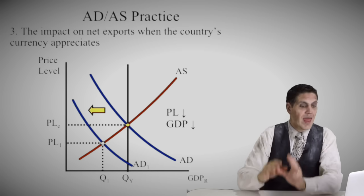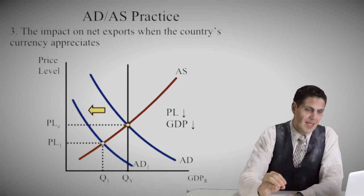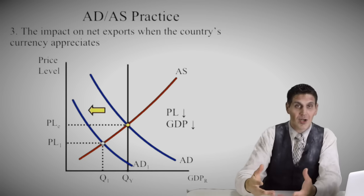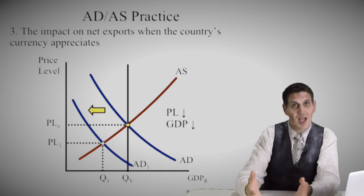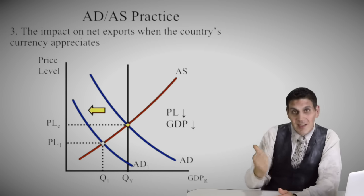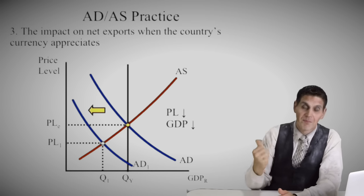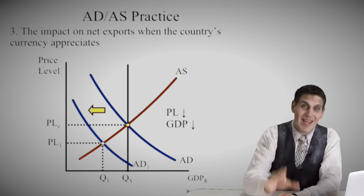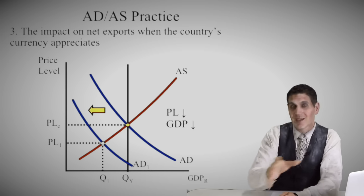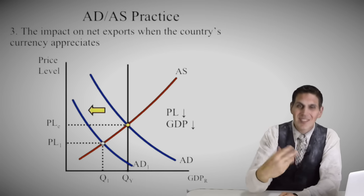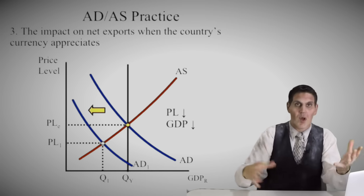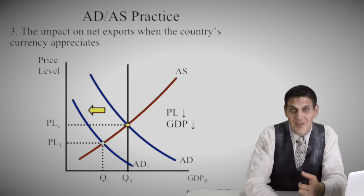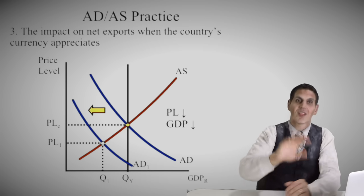Number three: an impact on net exports. Net exports is a shifter of aggregate demand. So if a country's currency appreciates — if it's more expensive to buy your currency — then it's more expensive to buy your stuff, so other countries can buy less of this country's stuff. Aggregate demand would fall, price level would go down, and quantity would go down. You'll learn more of that in unit five about appreciation and depreciation, but all these concepts are related — how other countries react, how the government reacts, fiscal policy, monetary policy.